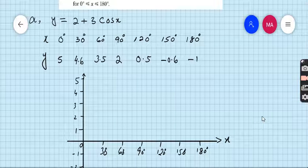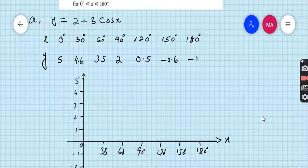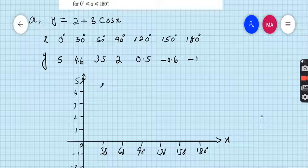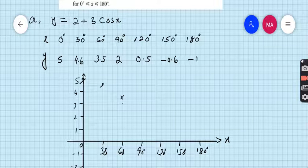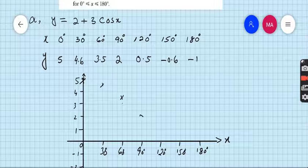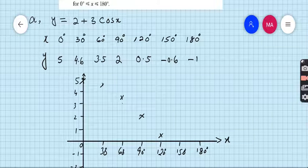Now plot these values on this axis. Choice of axis is yours. For example, I took four squares is 30 degrees. You can take six squares is 30 degrees or you can take two squares is 30 degrees. And on y-axis I took two squares is 1, so it's up to you. For 0 the value is 5, this is the first point. For 30 the value is 4.6.